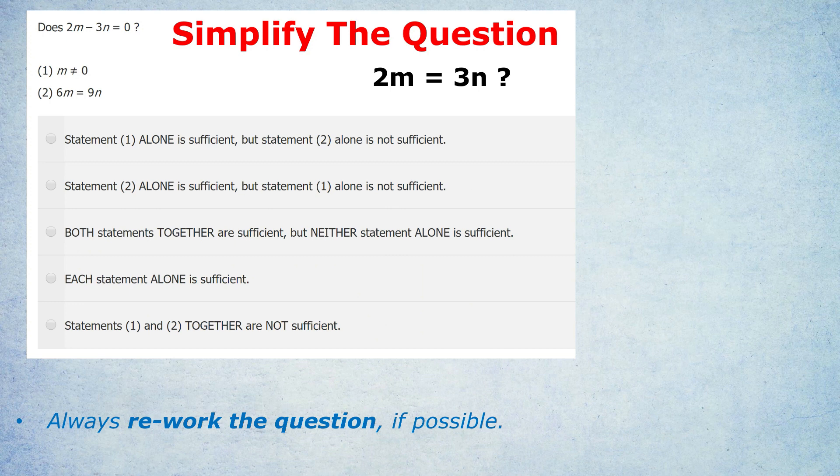But now the second statement looks much more promising. They tell us that 6m equals 9n. So we can just divide both sides by 3 and get 2m equals 3n. Answering the question that we had simplified. No need to sub things in or do anything crazy like that. Pick numbers. We just rework the question, make it an easier sounding question and then look through the statements. Two key lessons there. First, always rework the question. And second, and this does come up a fair bit, if you have an equation or an inequality next to a question mark, as in we don't know this for sure, keep the question mark.